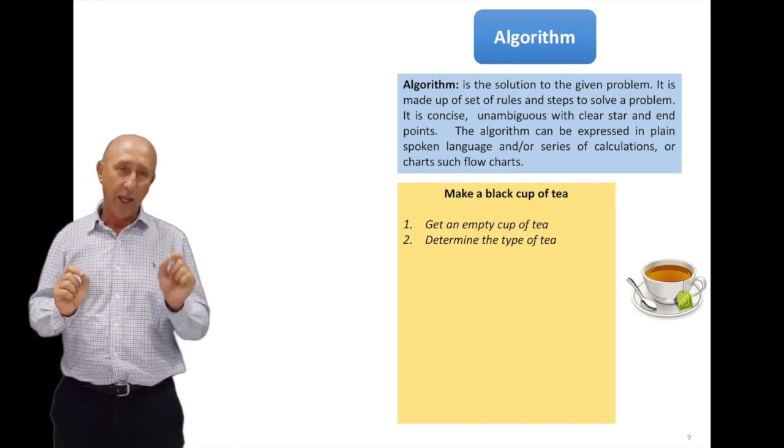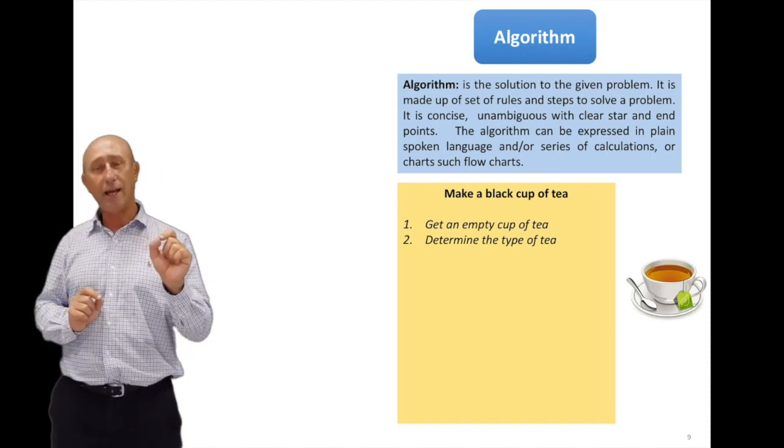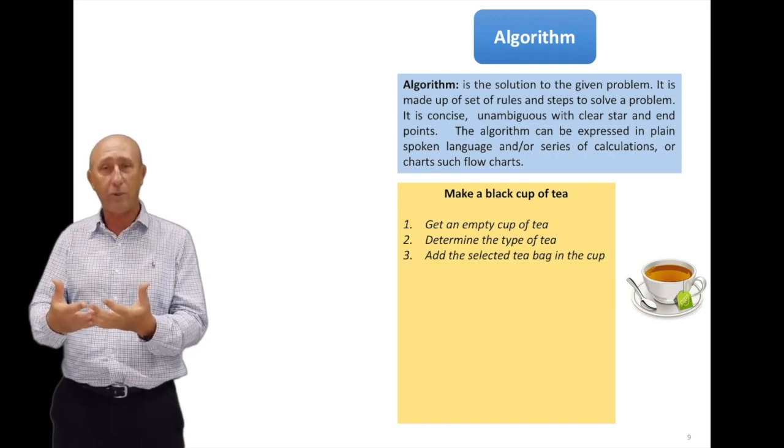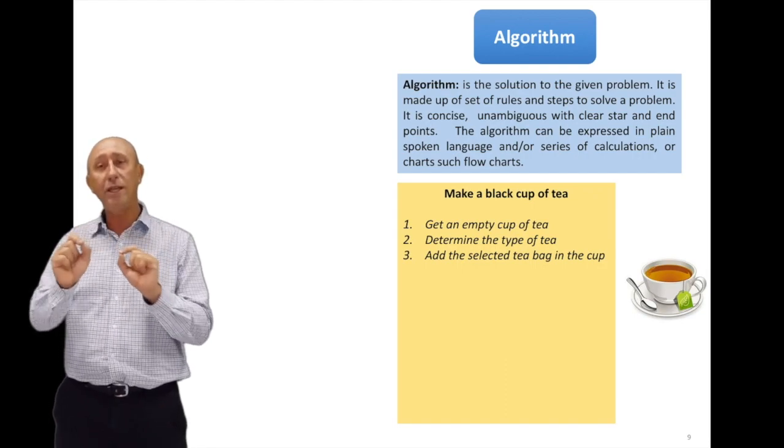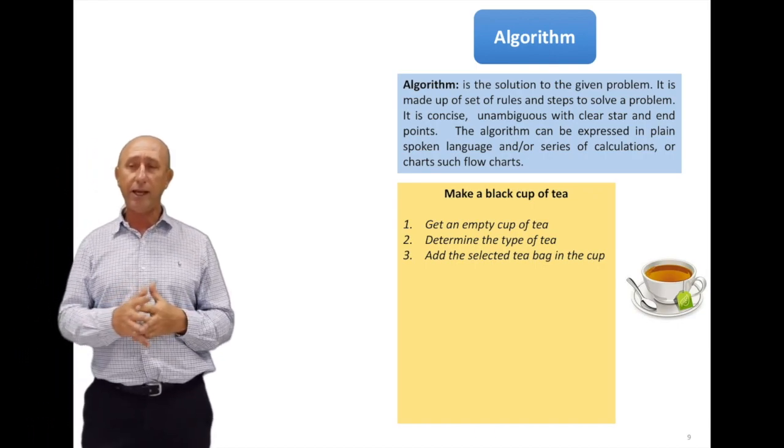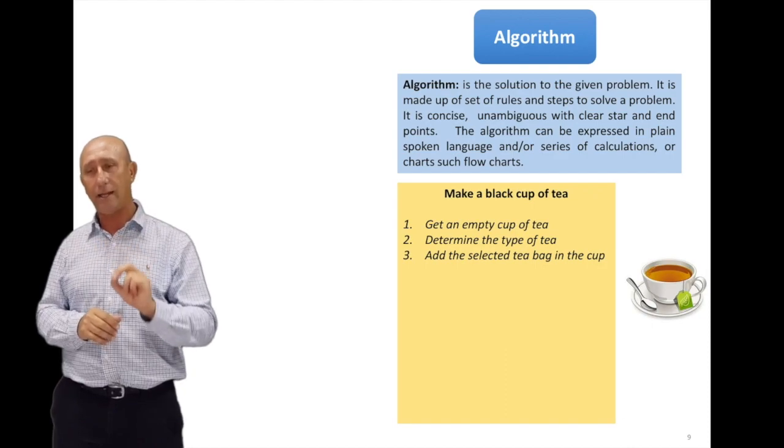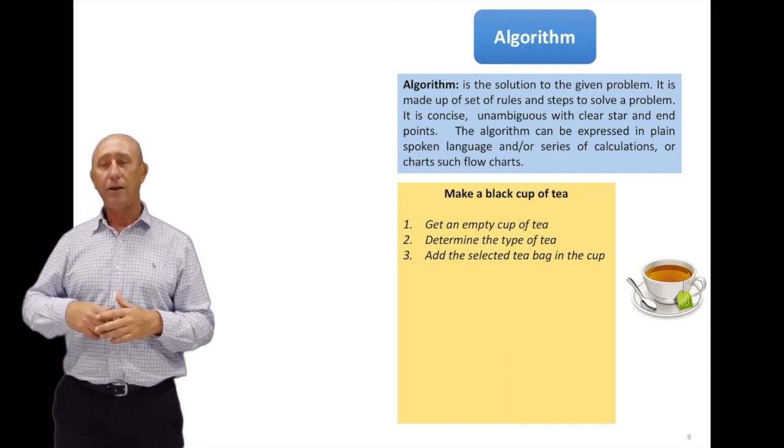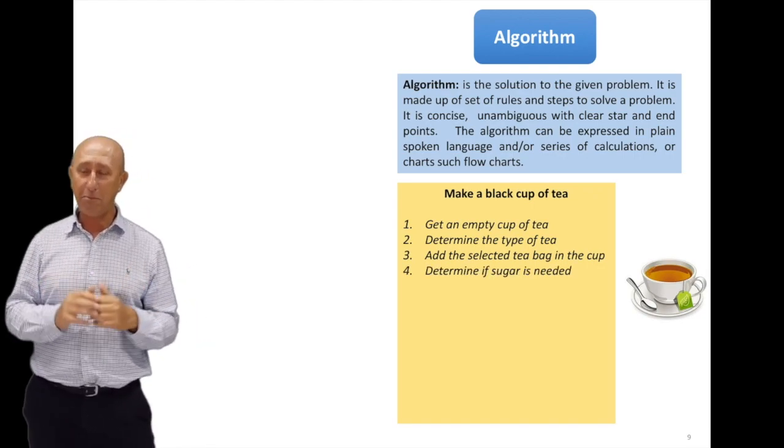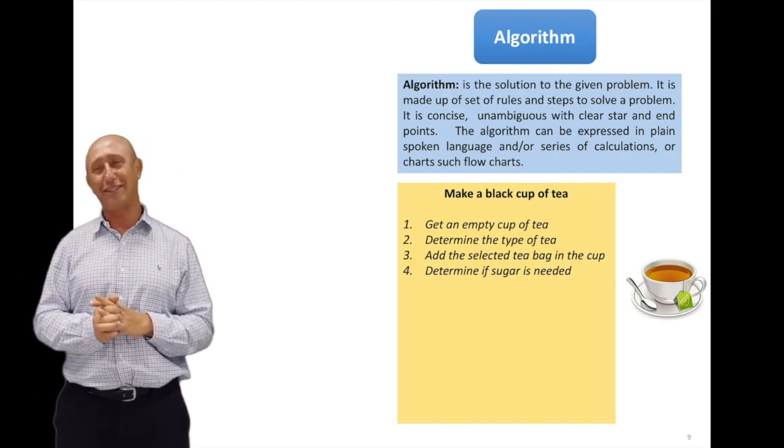The second thing I want to do is determine the tea type. There are different types of teas. Whenever you see determine, check, things like that, that is a process by itself. And when you want to translate it to computer solutions, you need to get more details about this. So determine the type of tea. After I make the determination, I got the selected tea bag and put it in the cup. And then you can say we need to determine the sugar first. Again, this is a process. Every person might have their own way of making tea, and that is the variation in algorithms.